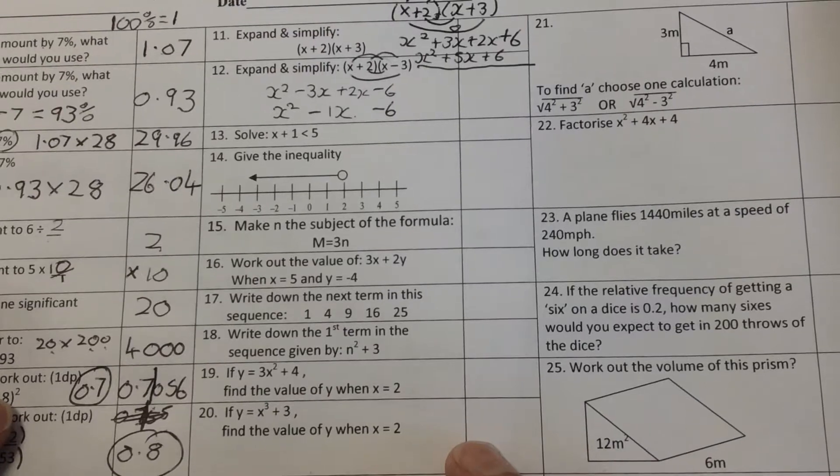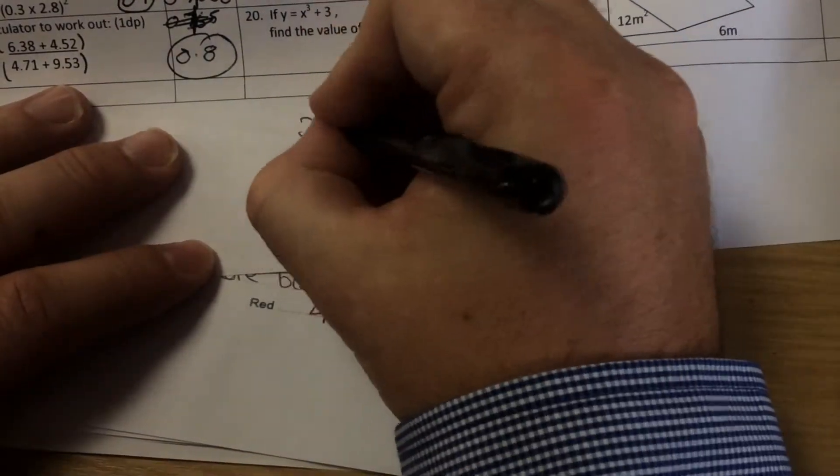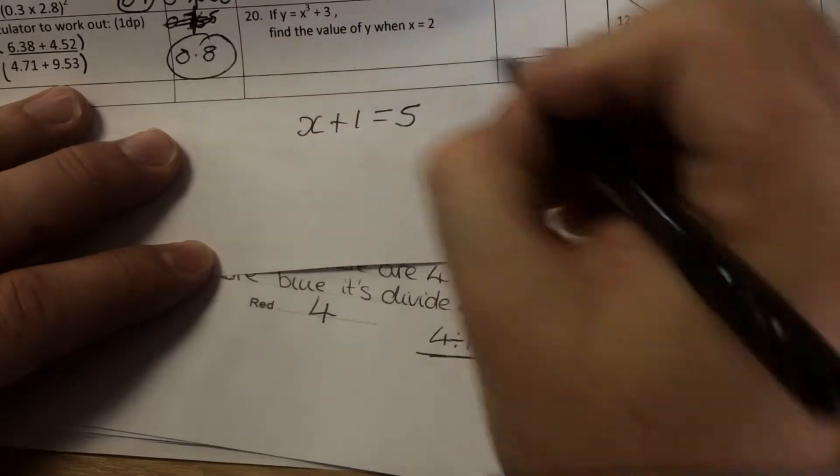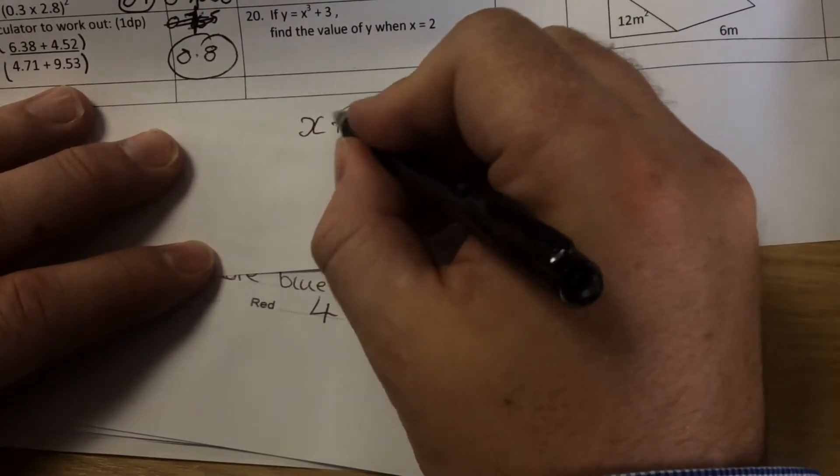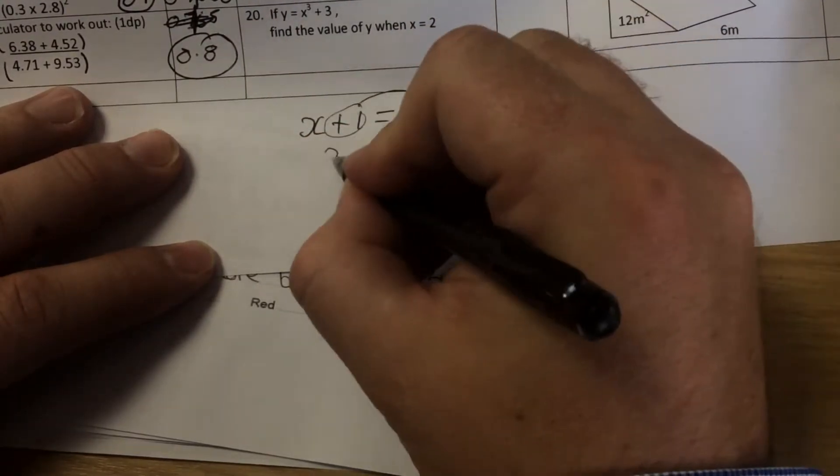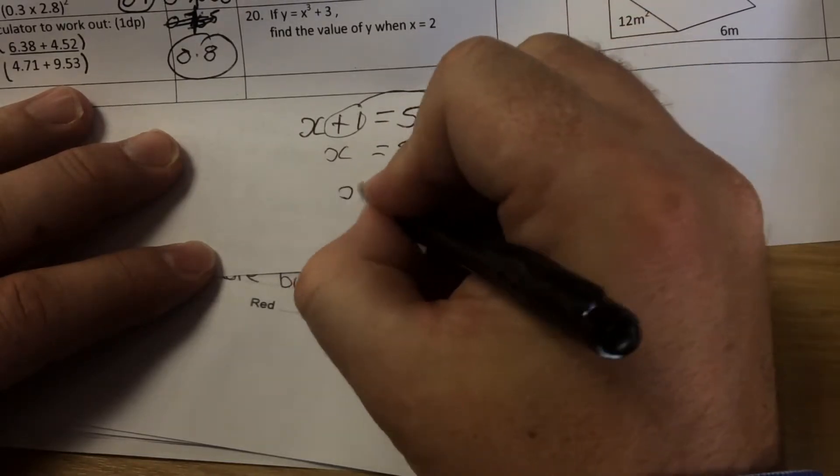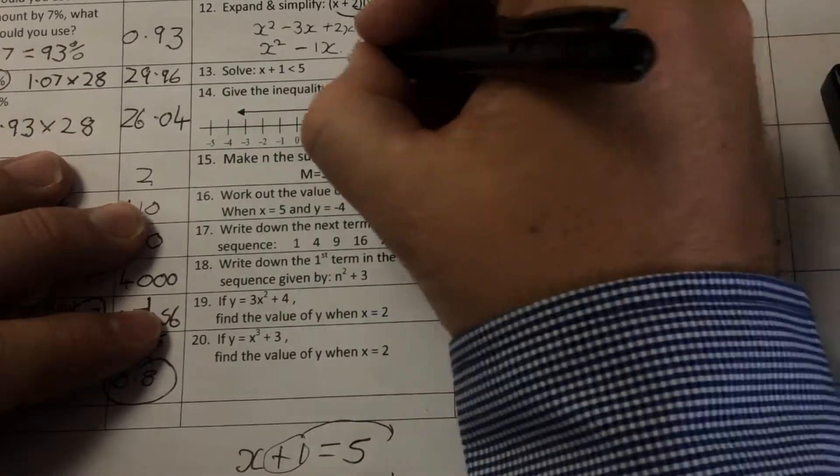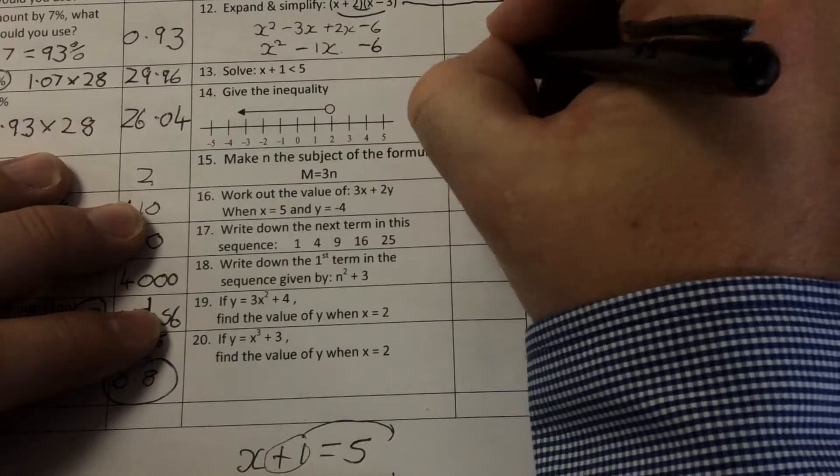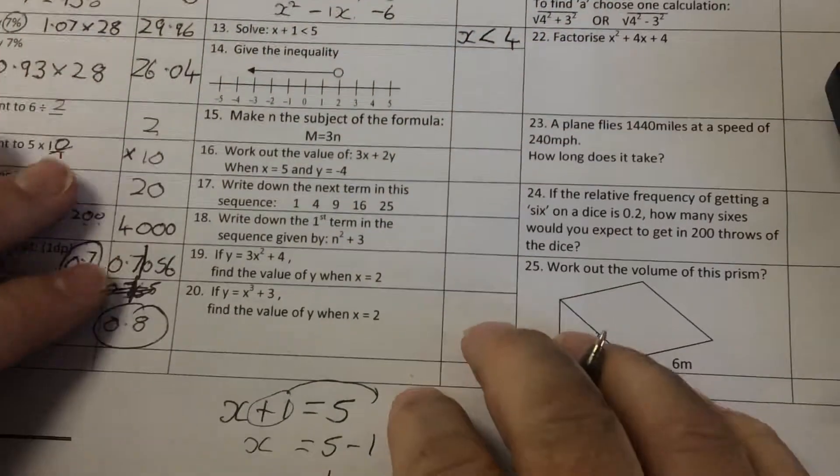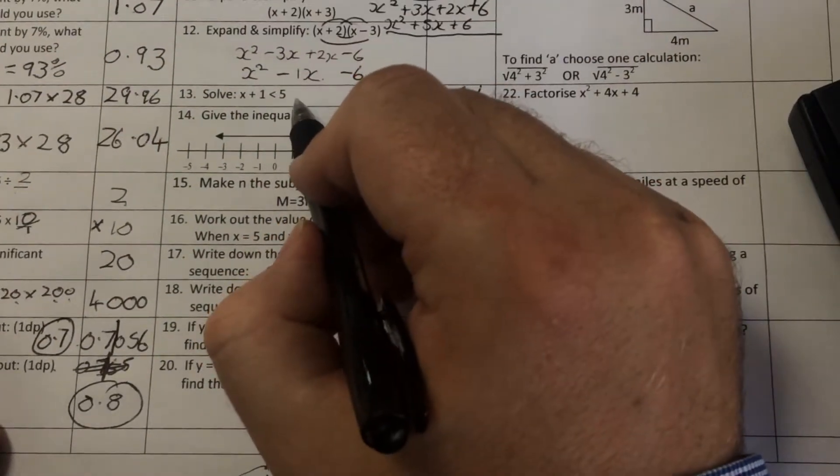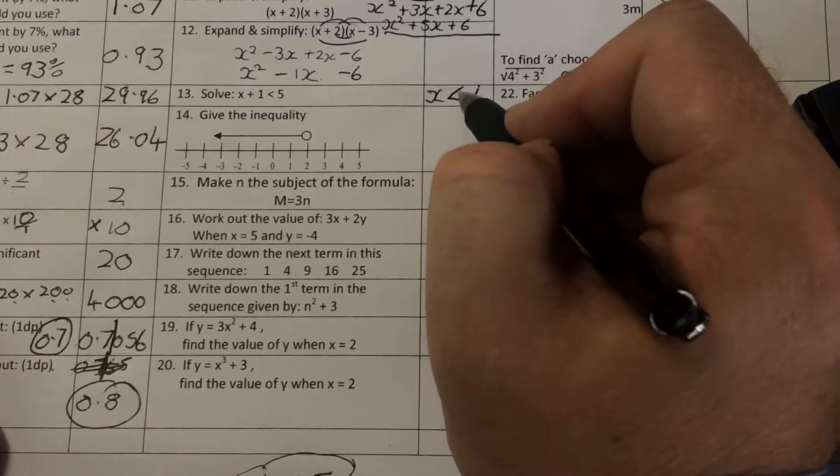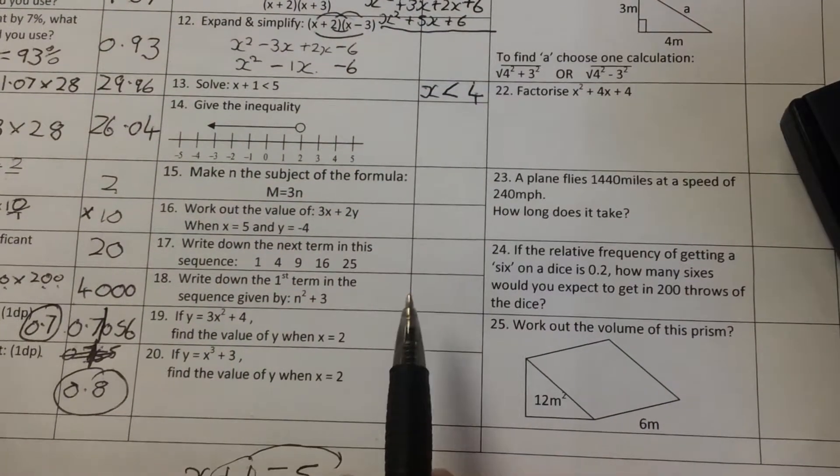Question number 13. Solve. If I wrote that as an equation, if I wrote it like this, x plus 1 equals 5, then I would say I want to find x. So the plus 1 goes over the other side. And x would be 5 take away 1, which is 4. You'd do exactly the same, but you'd change the equal sign to an arrow. So it'd be x is just less than 5. Because it's the same topic. The 1 goes over and you take away 1. So it's 5 take away 1. And x is less than 4.